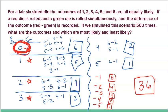Then we have ties: one and negative one both have five ways; four and negative four both have two ways; three and negative three both have three ways. What's least likely would be either a difference of five or negative five — both happen only one out of 36 times, so they're tied for least likely.